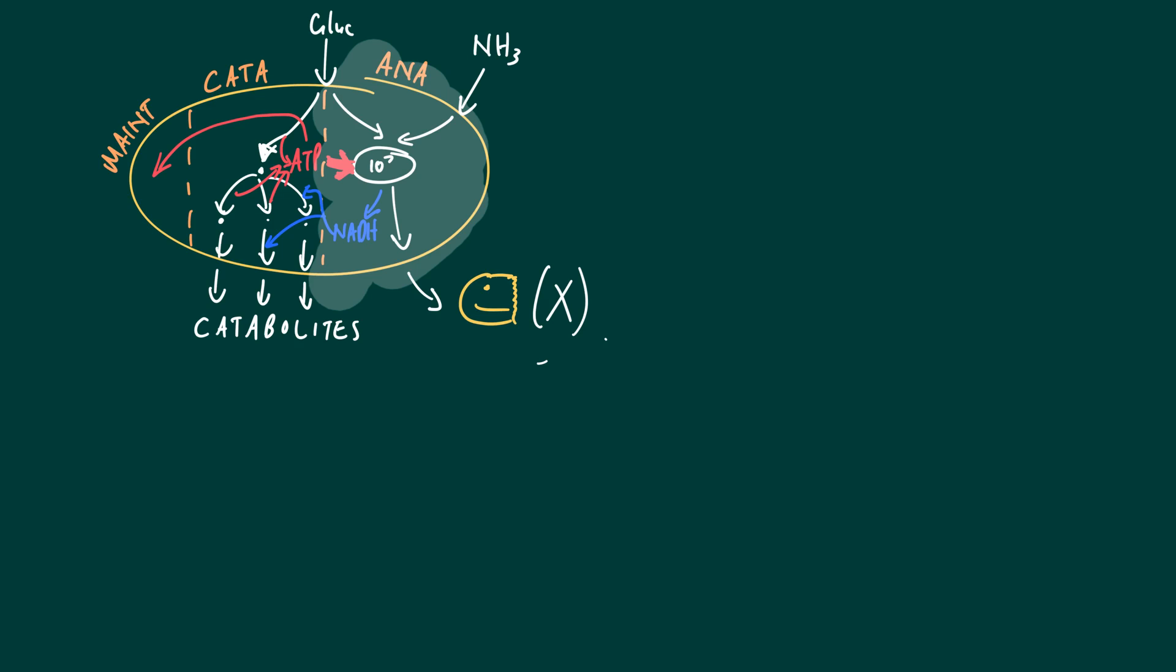For the anabolism, we can write the equation as follows: we have glucose plus ammonia, and then very importantly, we need to add ATP. The products will be mainly biomass, but also CO2 and a bit of NADH. This, in a sense, is not an overall reaction like we're used to.